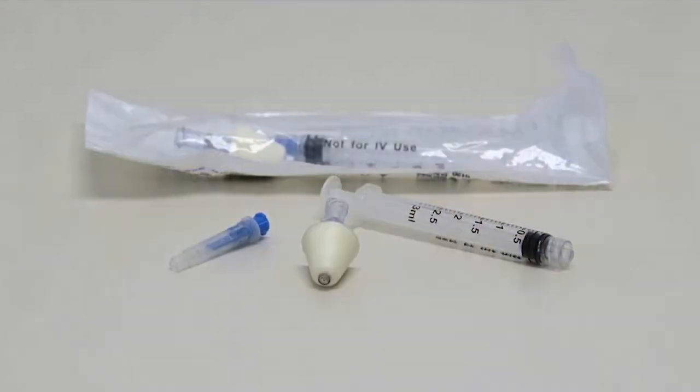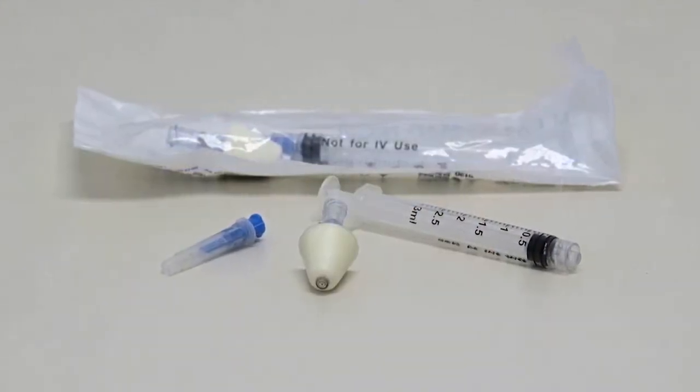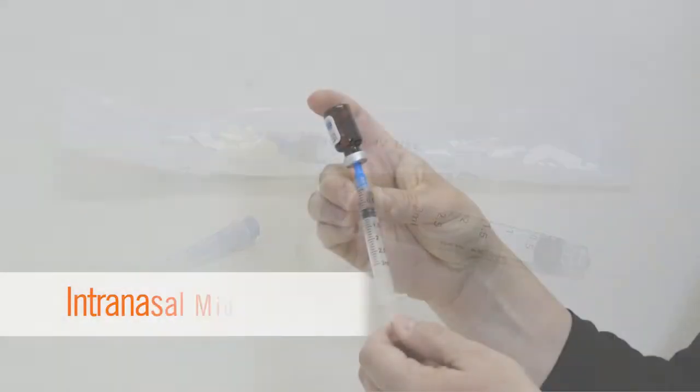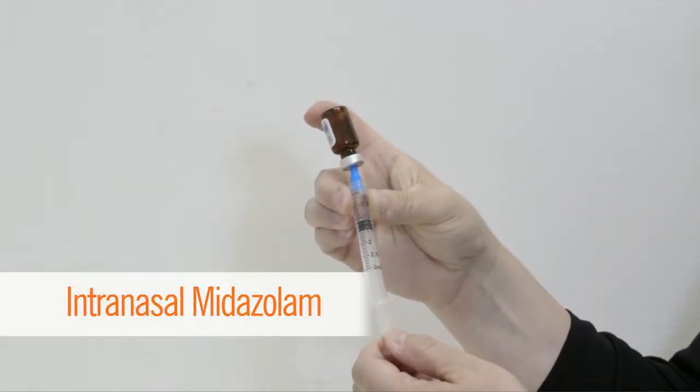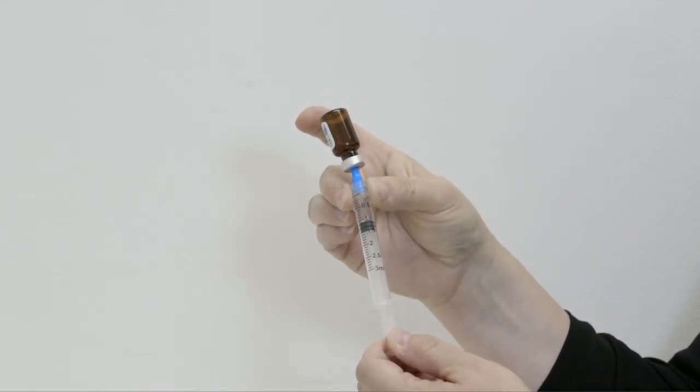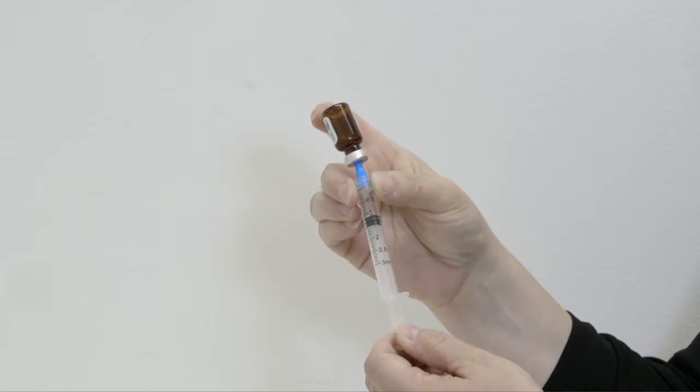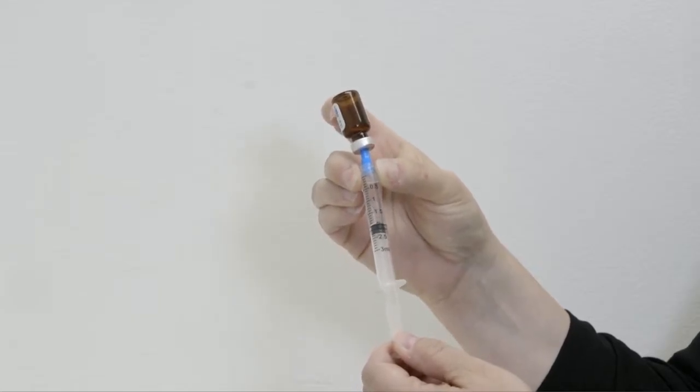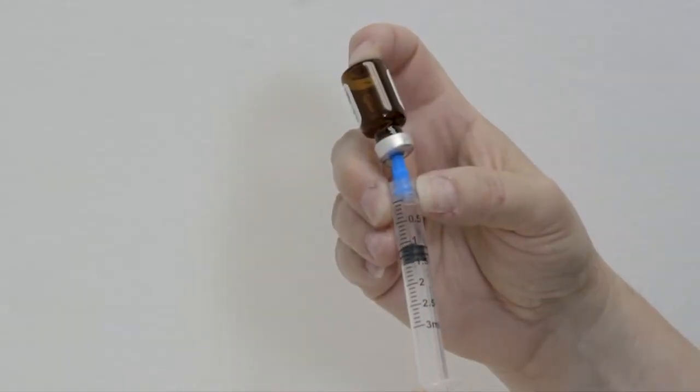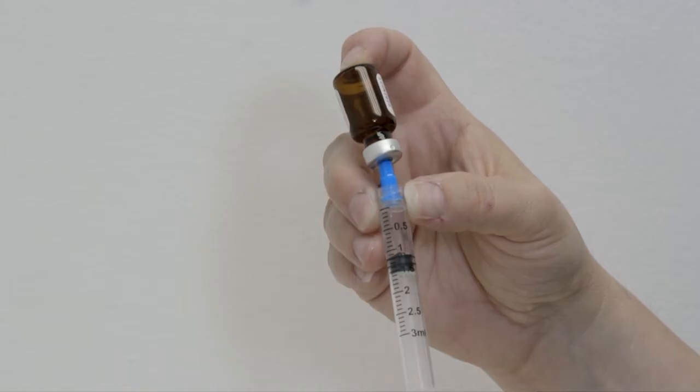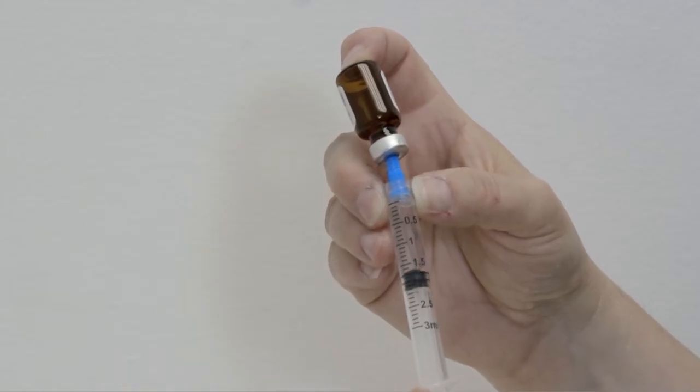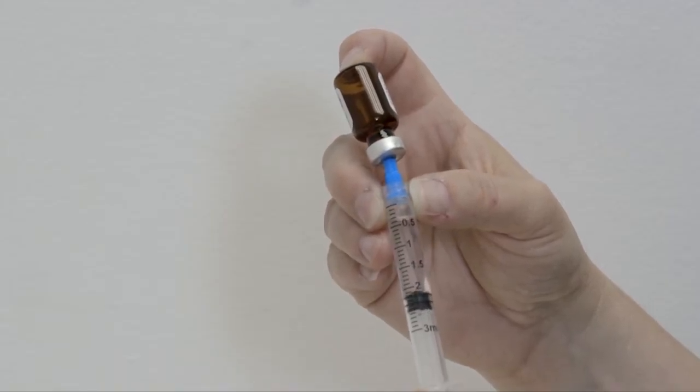You will need the following supplies to administer intranasal midazolam. Intranasal midazolam. This medication will come in a small brown vial. The vial holds two milliliters of medication. Your child's dose will range between one milliliter and two milliliters. Please follow your physician's order for the correct dose of medication.